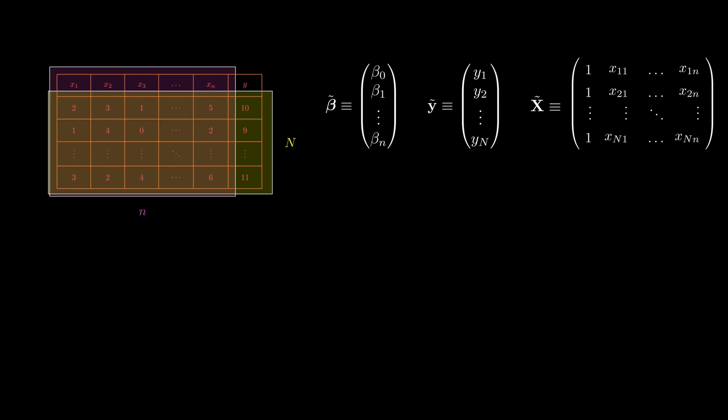We use these newly defined matrices to rewrite the equation of linear regression. The predicted Y-values, denoted as Y-hat, are given by the matrix product of X-tilde and beta-tilde. We can also express the loss function, called the residual sum of squares, or RSS, in matrix form. It's the square of the distance between the actual Y-values and the predicted Y-values, which in matrix notation is the transpose of that difference vector times itself.